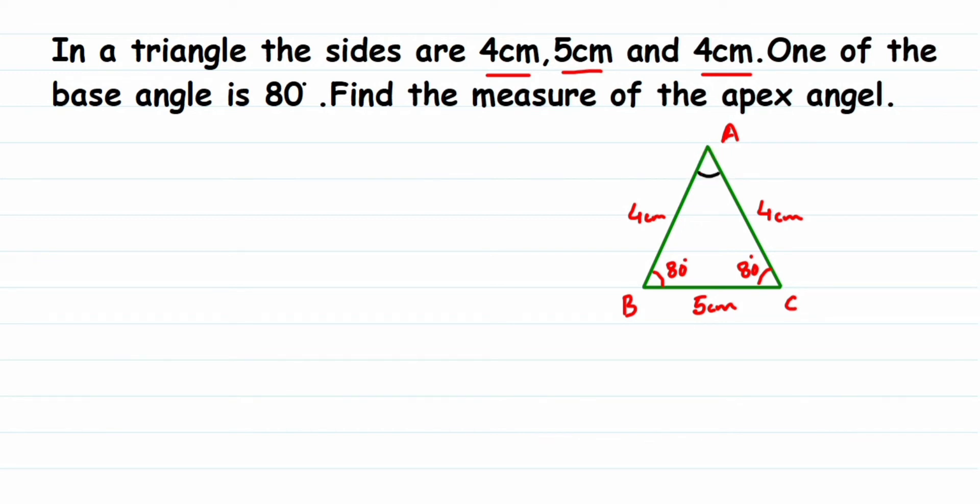Now, how to solve this? We know that the sum of all angles of a triangle is 180 degrees. If I add up all the angles, it should equal 180 degrees. Here we know two angles; we have to find out the third one. So let's start solving. The sum of all angles in a triangle is equal to 180 degrees.